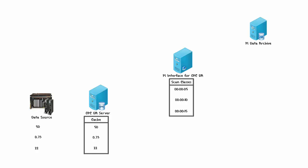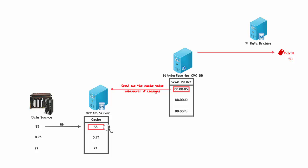For the first Scan Class, if the PI Interface for OPC DA finds an Advise Point, it makes a request to the OPC Server to send it the Cache Value whenever the Cache Value changes — kind of like signing up for updates. So the first value of 50 gets sent to the Advise Point. After an arbitrary amount of time, if the Data Source value is updated, that updates the Cache Value, and this new value gets sent to the PI Interface for OPC DA, which then sends it to the Advise Point.